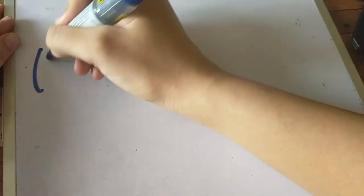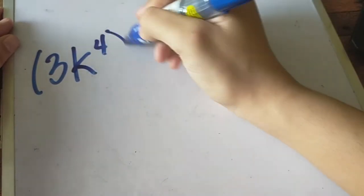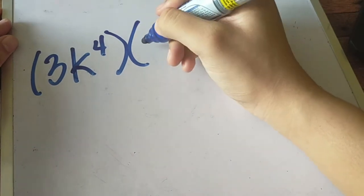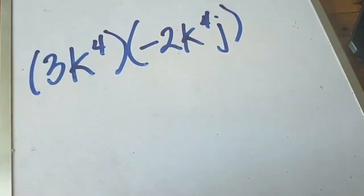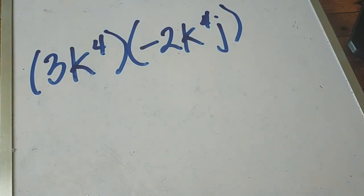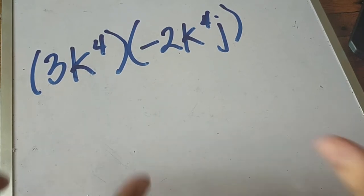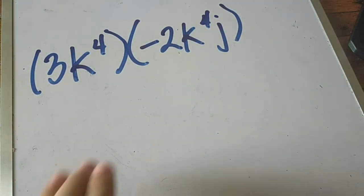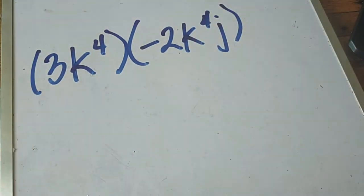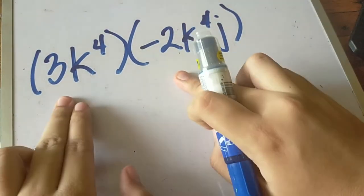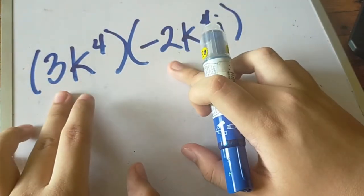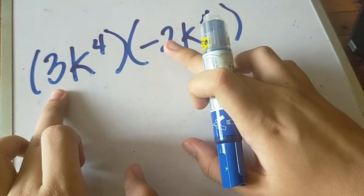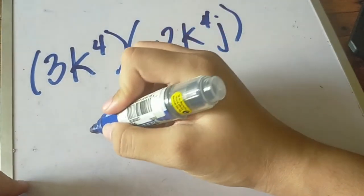Next is what if we have 3k raised to 4 times negative 2k raised to 4j. How do we simplify this? Here we have a number involved. We are still going to apply the operation that is present. Our operation since we're using groupings is multiplication. If there's a number, you shouldn't worry because we are going to apply the same rules in multiplication of integers. So 3 times negative 2 is negative 6.